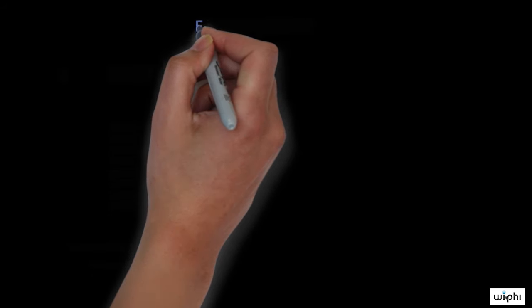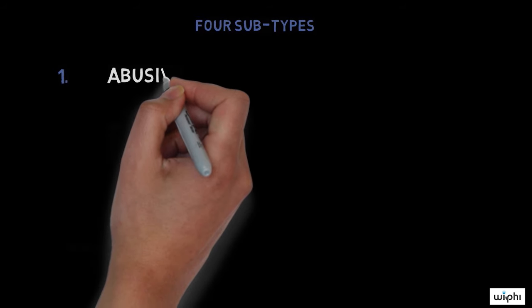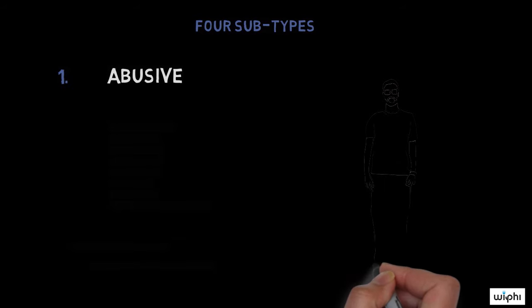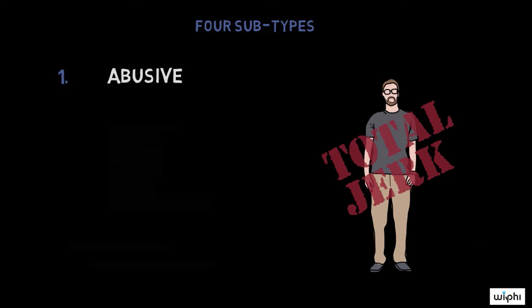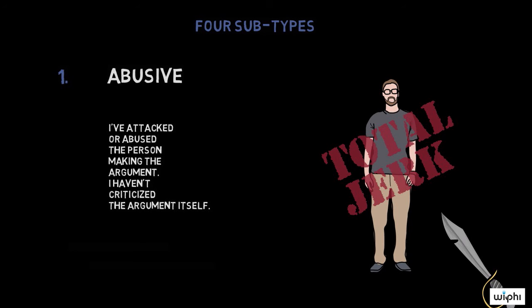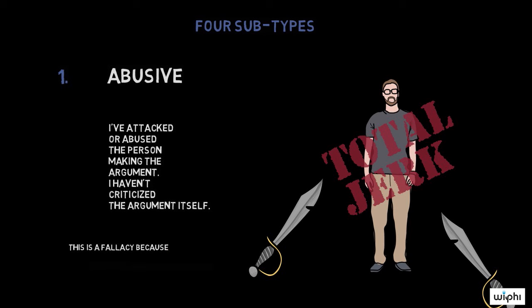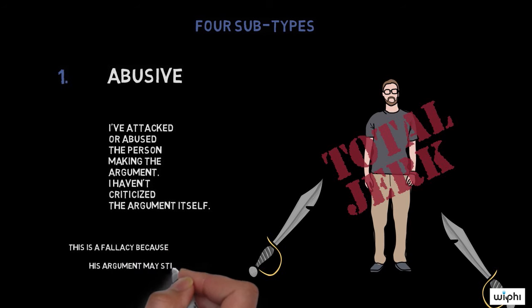Let's look more closely at this fallacy and its four subtypes. The first type of ad hominem fallacy is the abusive type. Returning to our first example where I called Vlad a jerk, I committed the abusive ad hominem fallacy — I attacked or abused the person making the argument rather than criticized the argument itself. I abused Vlad by attacking his character and equated his poor character with his argument. This is a fallacy because while Vlad might not have good standing as I see him, his argument may still be valid — cats might be better domestic pets.